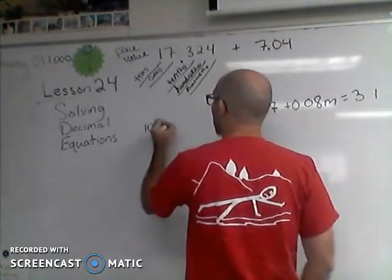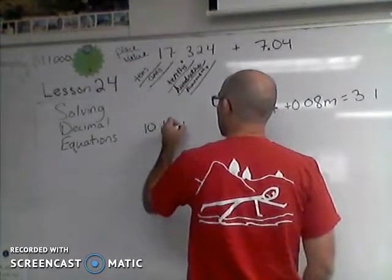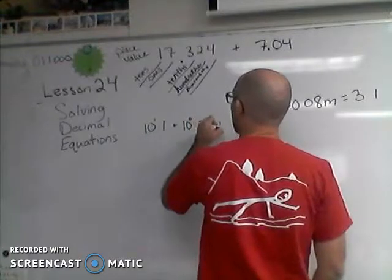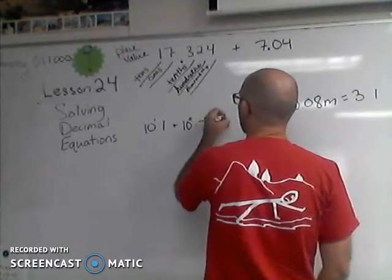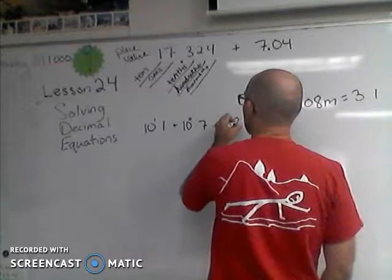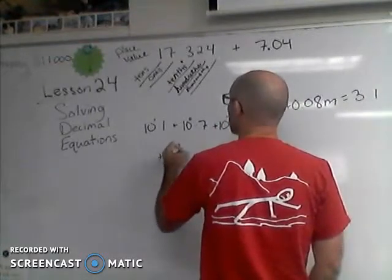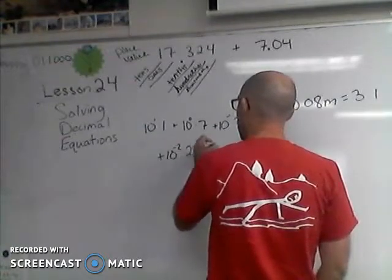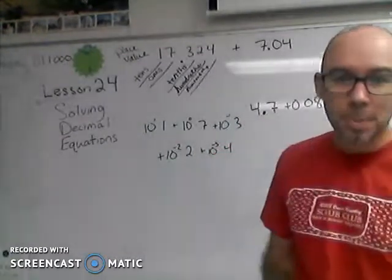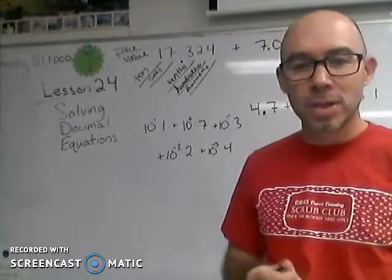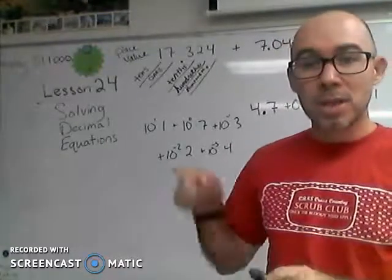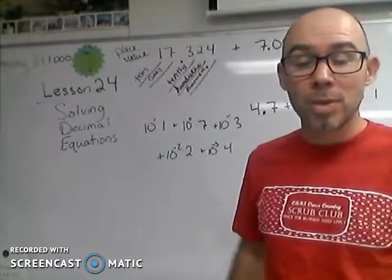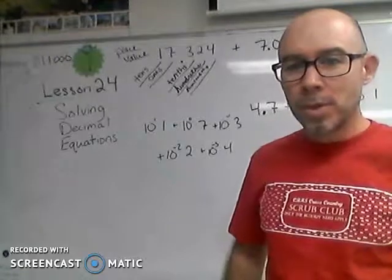That number could be written as 10 times 1 plus 10 to the 0 times 7 plus 10 to the negative 1 times 3 plus 10 to the negative 2 times 2 plus 10 to the negative 3 times 4. That's all place value is - it's position. That 3 in that position tells you what it's worth. If the 3 was somewhere else, it would be worth a different amount.